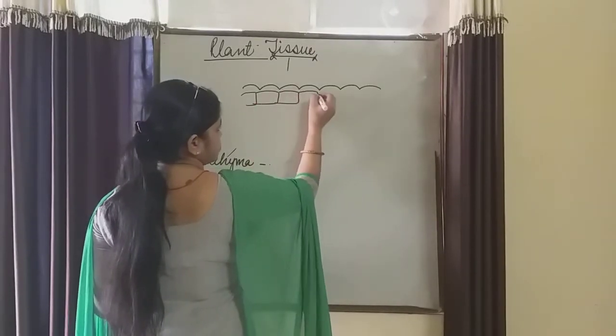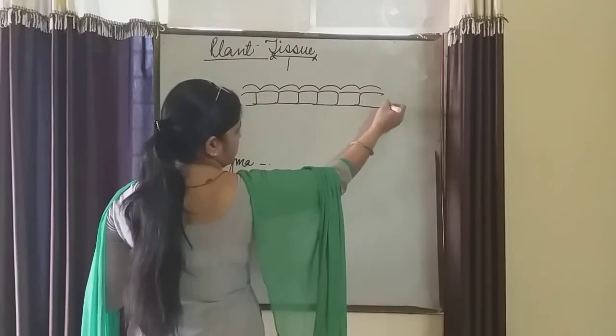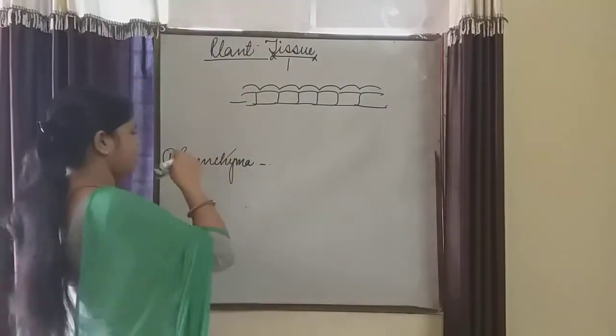If we cut the TS of stem, in the leaves, in the roots, the uppermost layer is made up of parenchymatous tissue. This layer is made up of parenchyma tissue.